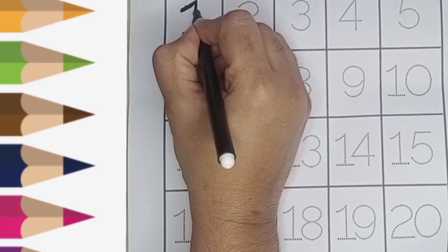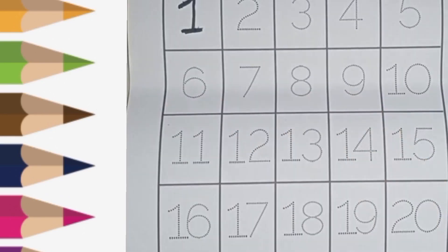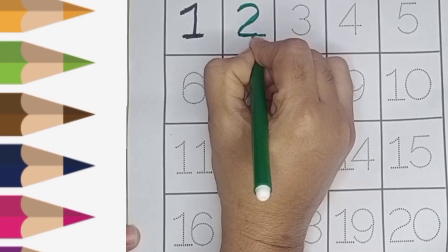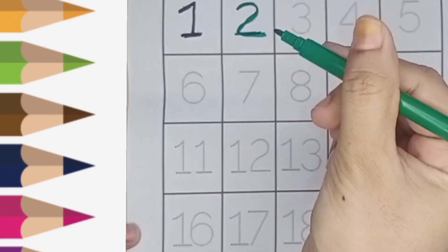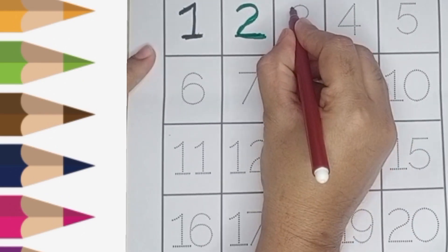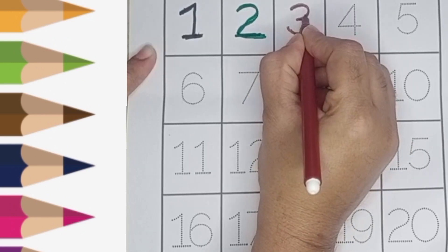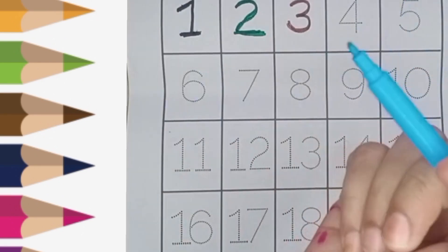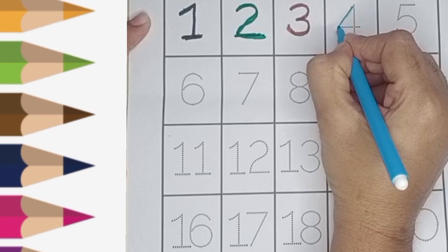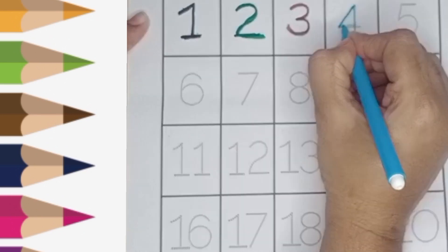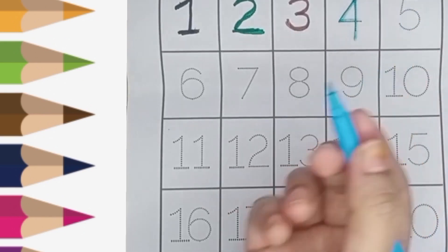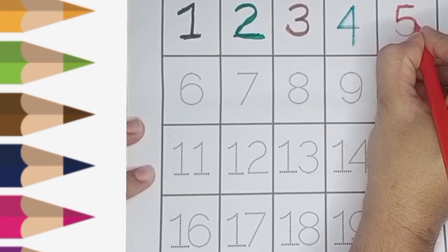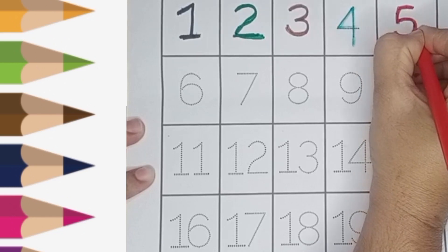One, one, green color. Two, two, brown color. Three, three.